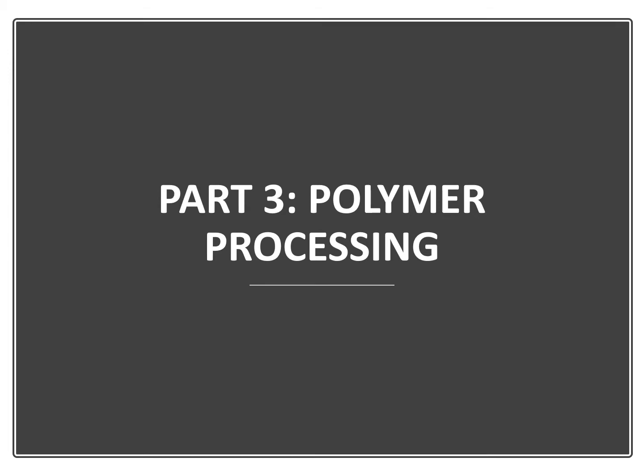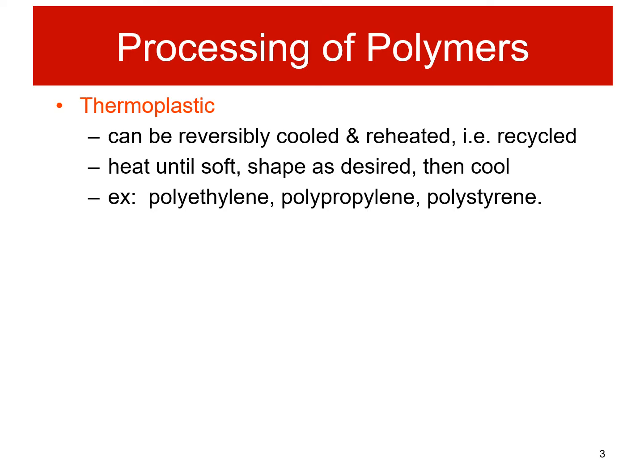We have now come to the third part of the chapter dedicated to some of the major polymer processing. We will now discuss on the processing aspect of polymers. The first type of polymers are the thermoplastics, and before we can relate to the processing you must first understand and recall the characteristics of this material.